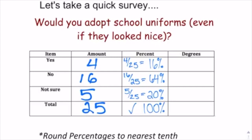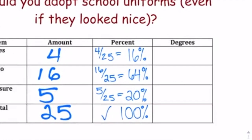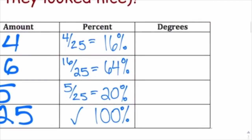Because a circle is exactly 360 degrees, I need to take every single percentage or fraction and multiply them by 360, since there are 360 degrees in a circle. It's not like percentages which are out of 100 — circles are out of 360 degrees.